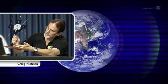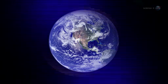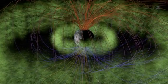It's called chorus, explains Craig Kletzing of the University of Iowa. This is one of the clearest examples we've ever heard. Chorus is an electromagnetic phenomenon caused by plasma waves in Earth's radiation belts.